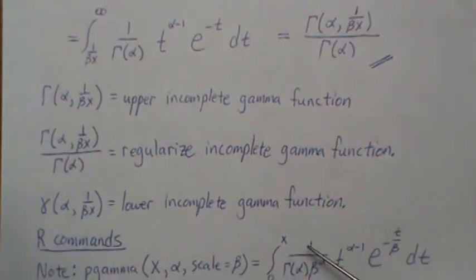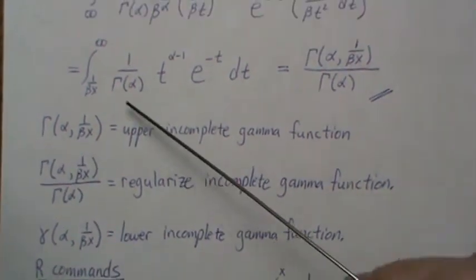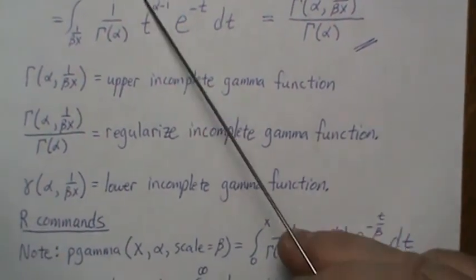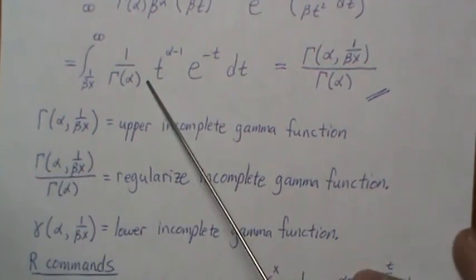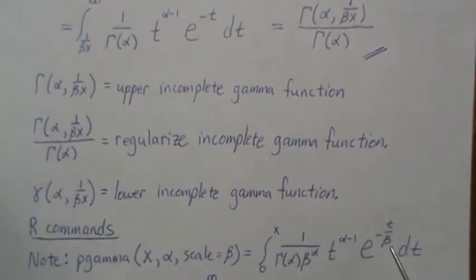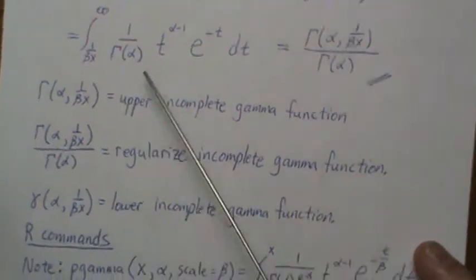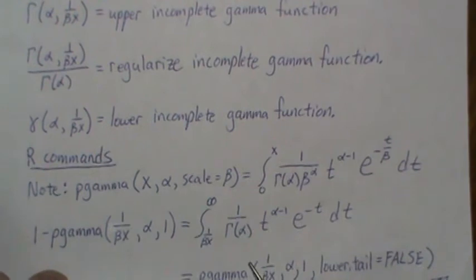First of all, instead of going from zero to a number, we go from a number to infinity. So we could take one minus this to get this. But somehow, you know, the beta is zero in this case. And then we have to just put one over beta X. So that's what we do.